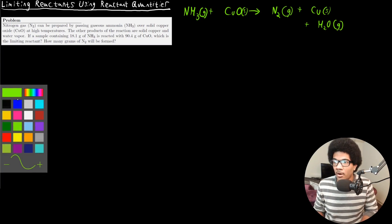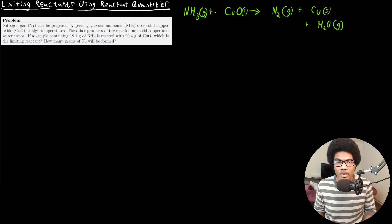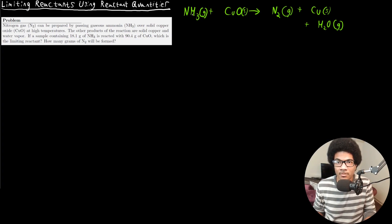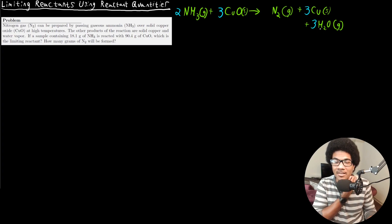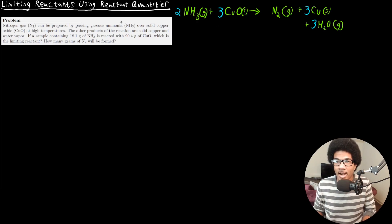Now we add stoichiometric coefficients to balance the equation. We place a coefficient of 2 in front of NH3, a 3 in front of CuO, a 3 in front of Cu to balance the copper, and a 3 in front of H2O to balance the remaining hydrogens and oxygens. That gives us a balanced chemical equation: 2 NH3 (g) + 3 CuO (s) → N2 (g) + 3 Cu (s) + 3 H2O (g).